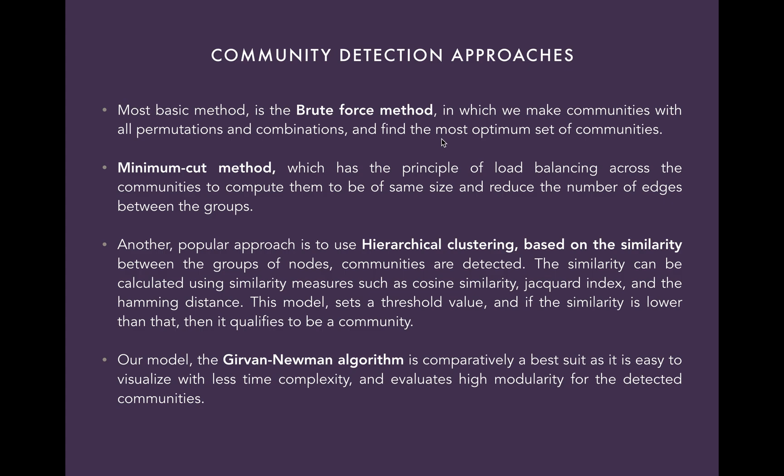Hierarchical clustering uses similarity measures to find communities based on similarities that can be calculated using measures such as cosine similarity, Jaccard index, and Hamming distance. This model sets a threshold value, and if the similarity is lower than that, then it qualifies to be a community. Our model, the Girvan-Newman algorithm, is comparatively a better fit as it is easy to visualize with less time complexity and evaluates high modularity for the detected communities.